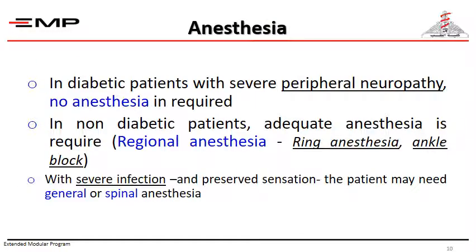Anesthesia. In diabetic patients with severe peripheral neuropathy, no anesthesia is required. In non-diabetic patients, adequate anesthesia is required. We usually use regional anesthesia in the form of ring anesthesia or ankle block. With severe infection and preserved sensation, the patient may need general or spinal anesthesia.